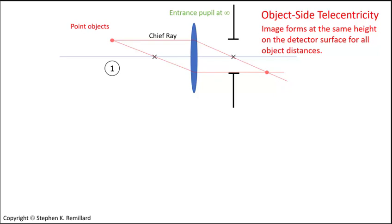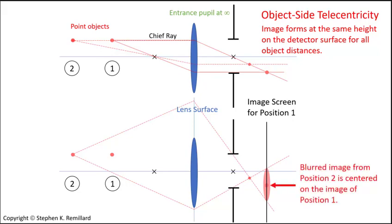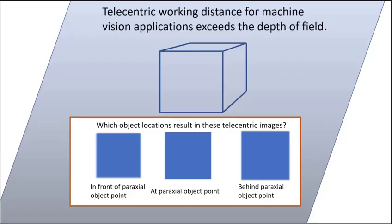This might seem unlikely because you know that as the object moves farther away from the lens, the focused image moves closer to the lens and closer to the optical axis — that is, the far object has a smaller magnification. But it is the focused image that moves closer to the lens and to the optical axis. When a point object is at position 1, its focused image forms on the screen. If the point object moves to position 2, its focused image forms closer to the lens, as well as closer to the optical axis. The light that forms the nicely focused image continues onto the screen and leaves an unfocused blur. It's the center of that blur that is at the same height as the nicely focused image formed by the object when it is at position 1. And that's what matters.